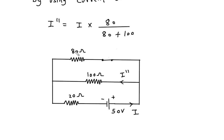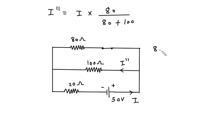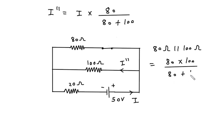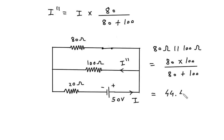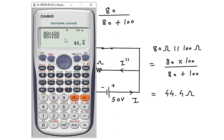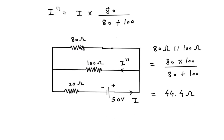Here we can see this is 80 ohm parallel with 100 ohm. This will be 80 into 100 divided by 80 plus 100, which equals 44.4 ohm. We will replace these two resistances with 44.4 ohm.